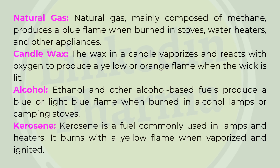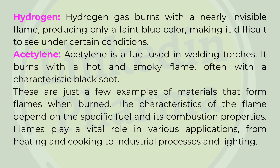Alcohol (Ethanol) — alcohol-based fuels produce a blue or light blue flame when burned in alcohol lamps or camping stoves. Kerosene — a fuel commonly used in lamps and heaters, burns with a yellow flame when vaporized and ignited. Hydrogen — hydrogen gas burns with a nearly invisible flame, producing only a faint blue color, making it difficult to see under certain conditions. Acetylene — used in welding torches, burns with a hot and smoky flame, often with a characteristic black soot. These are just a few examples of materials that form flames when burned; the characteristics of the flame depend on the specific fuel and its combustion properties.